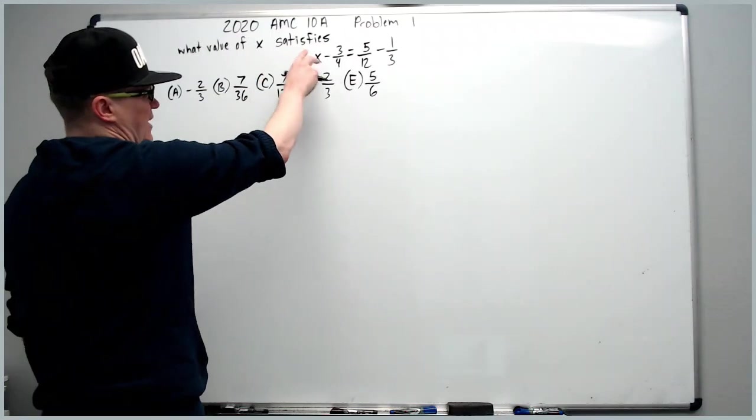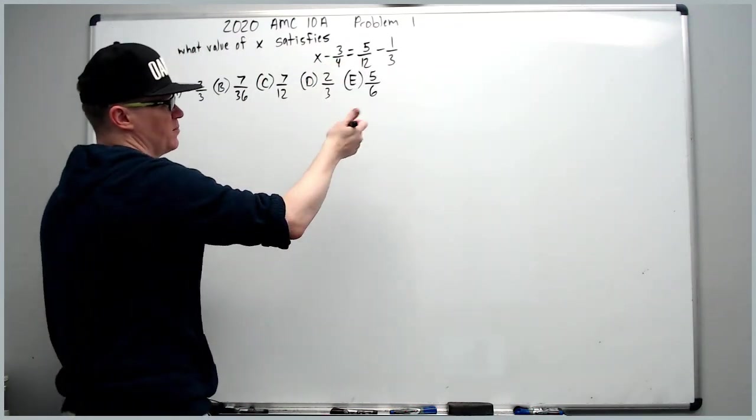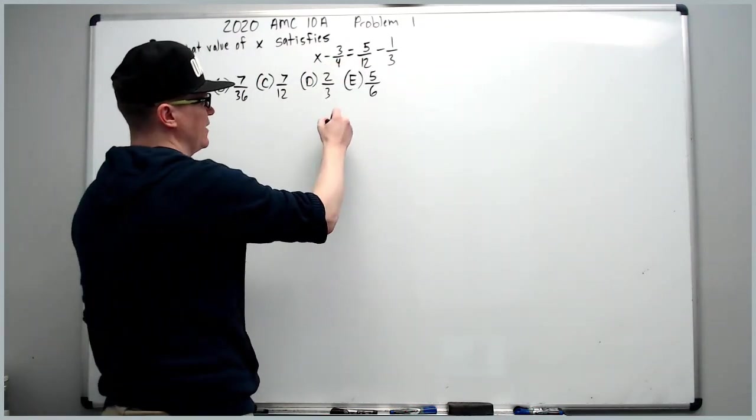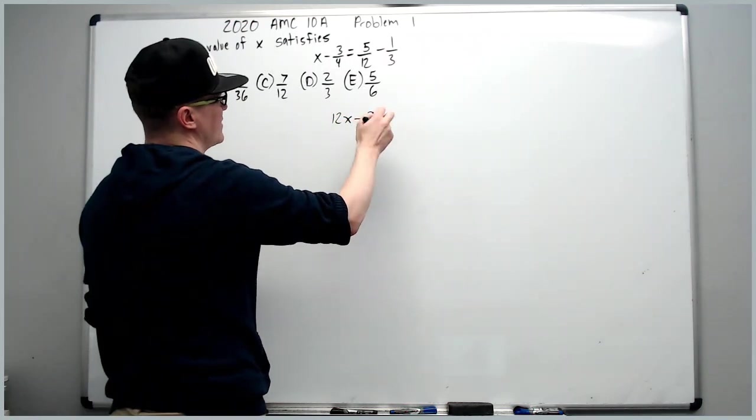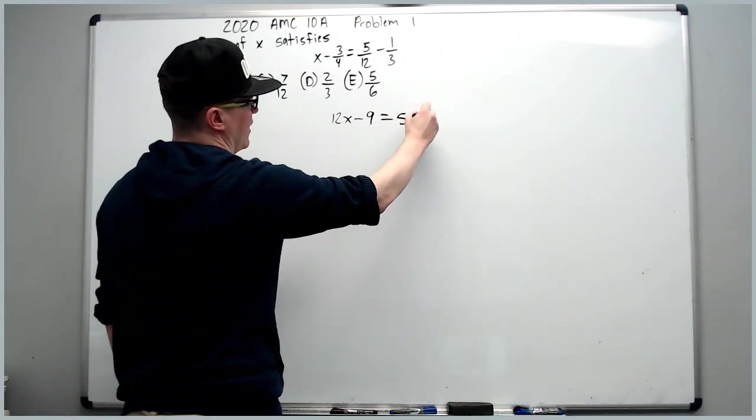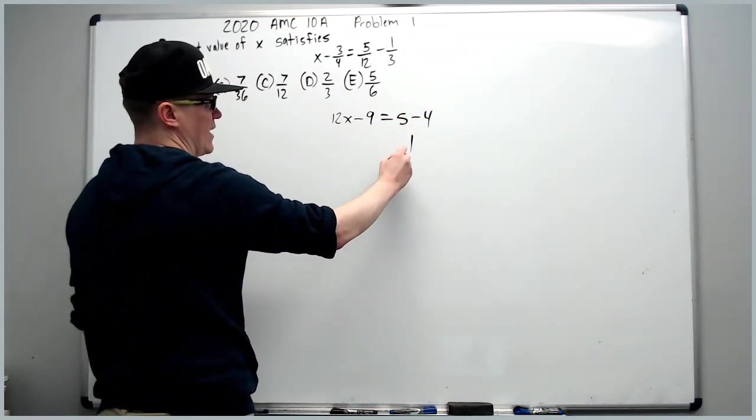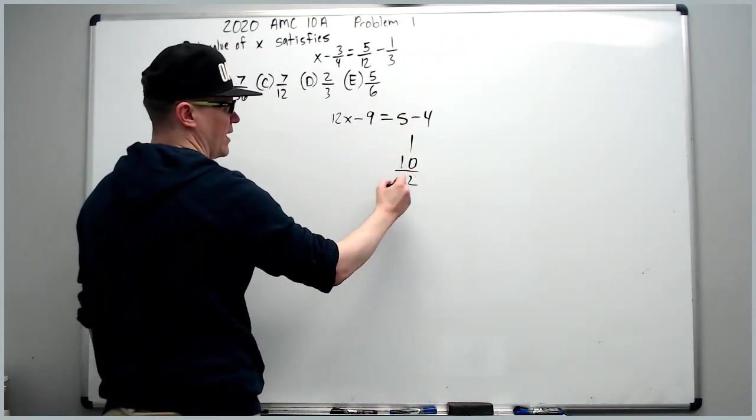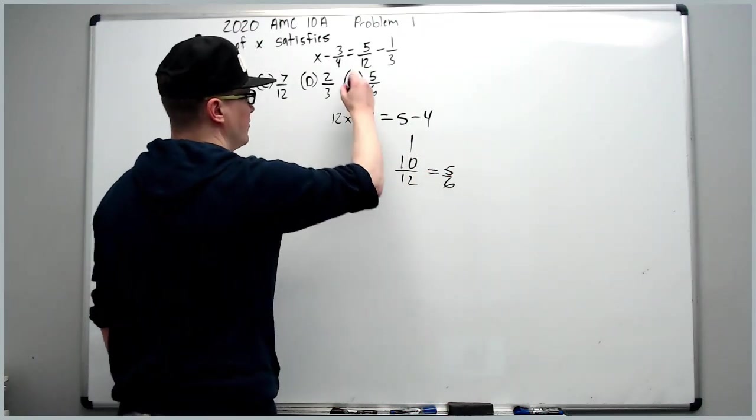What value of x satisfies this equation? You're simply going to multiply by 12 immediately. 12x minus 9, because 12 over 4 is 3 times 3 is 9, equals 5 minus 4. That's 1, add 9 to get 10, divide by 12 to get 5 over 6.